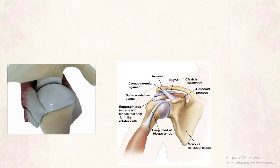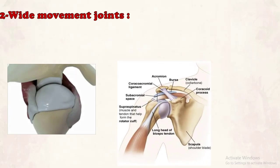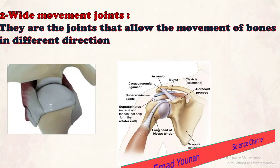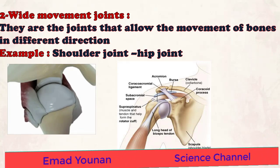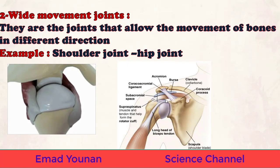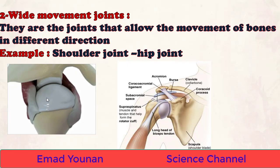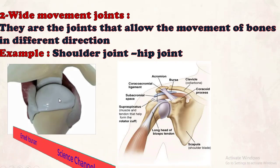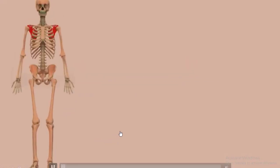Another type of synovial joint: wide movement joints, which allow the movement of bones in different directions. An example is the shoulder joint between the scapula and the humerus of the upper limbs. This joint allows movement in different directions. Another example is the hip joint, which exists between the pelvic girdle and the femur of the lower limbs, located in the acetabulum of the pelvic girdle.